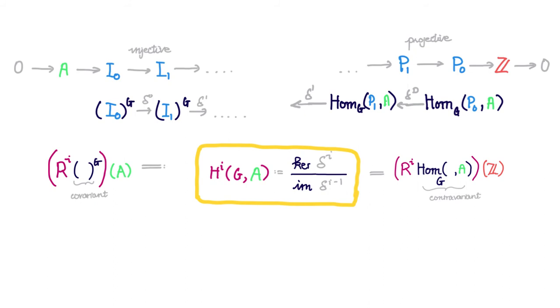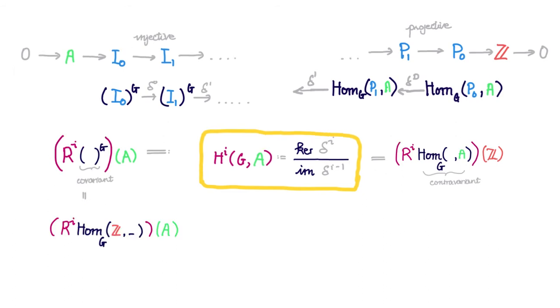Thus, this gives us two ways of thinking about these cohomology groups. This is not actually some kind of miracle or coincidence, but just an example of a more general principle.